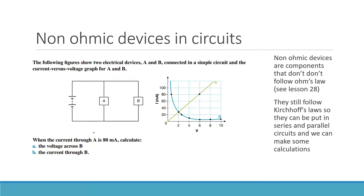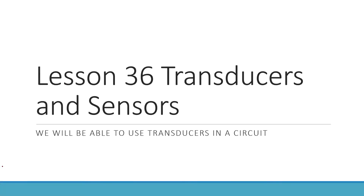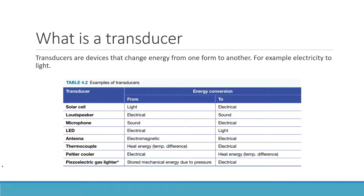A potentiometer is pretty much a voltage divider in a single component, and what you end up with is a different voltage drop over certain parts of the circuit. We then briefly talked about non-ohmic devices and circuits. Let's now talk about transducers — what is a transducer?